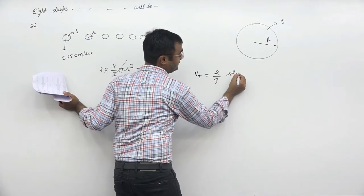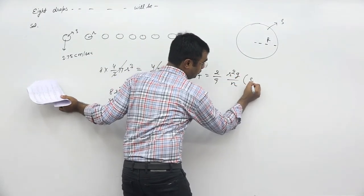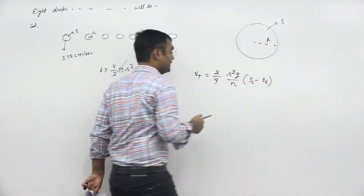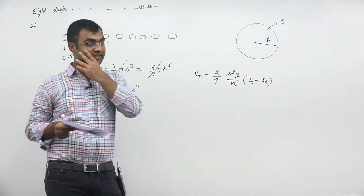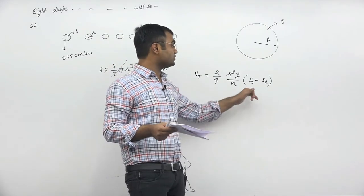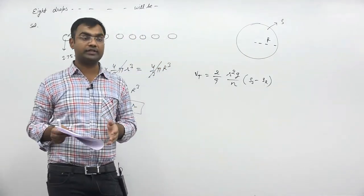Terminal velocity has a formula: 2/9 times r squared g by eta into rho s minus rho l. Eta is the coefficient of viscosity of air, which will not change. Rho s and rho l values also won't change.